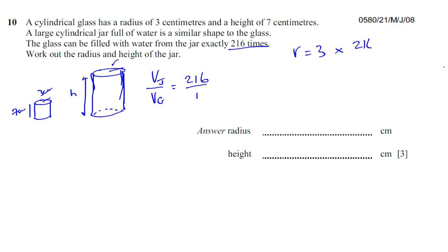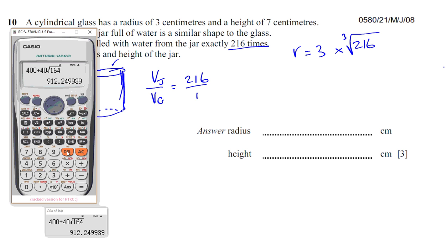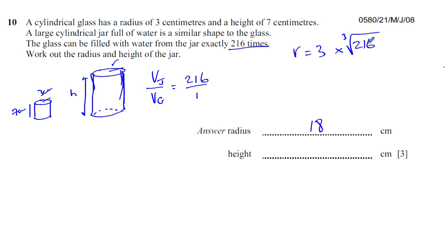Times, this is the ratio of the volumes, 216 over 1. I don't bother putting over 1. 216 is the ratio of the volumes. I want the ratio of the lengths because the radius is a length. So to find the ratio of the lengths, I've got to find the cube root of the ratio of the volumes. Now the cube root of 216 is equal to 6. 6 times 3 gives you 18. So the radius is going to be 18 centimeters.